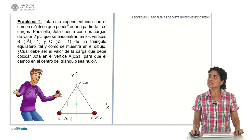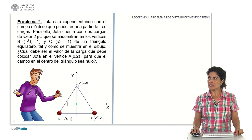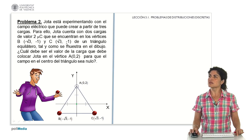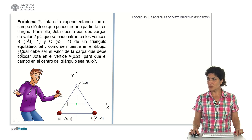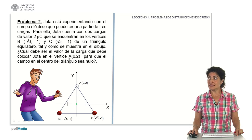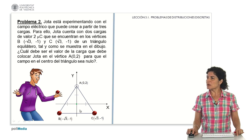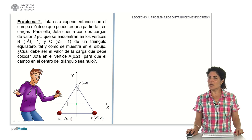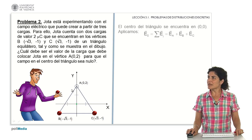We analyze a second problem. In this problem, J is experimenting with the electric field he can create from three charges. J has two charges of value 2 microcoulombs that are at vertices B and C, whose coordinates are well defined, of an equilateral triangle as shown in this drawing. I am asked what must be the value of the charge that J must place at vertex A of that triangle so that the field in the center of the triangle is zero.